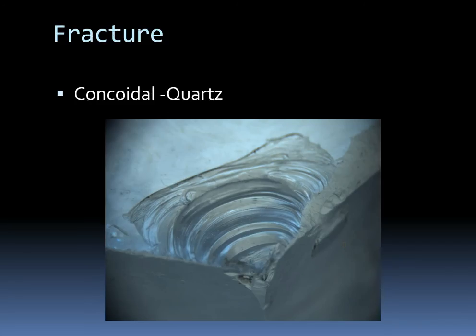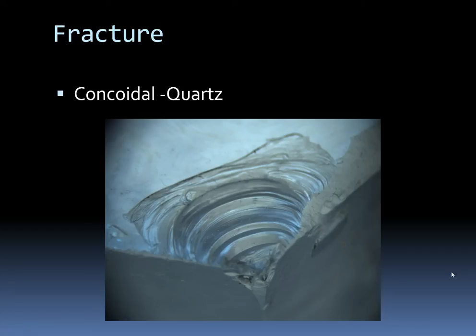Not everything has cleavage — some minerals don't break along nice parallel sides. One of the most common minerals that doesn't have cleavage is quartz. When quartz breaks, we say it has a conchoidal fracture — a fracture is when it breaks unevenly. This probably bears a striking resemblance to glass, and that's because quartz is basically what makes glass up. That beautiful conchoidal fracture we see in both glass and quartz crystals.